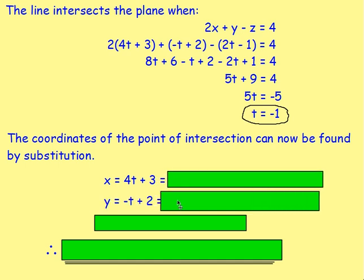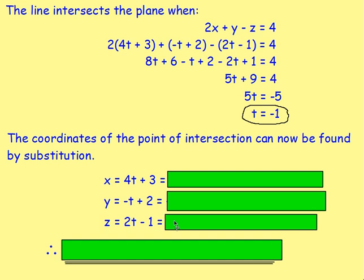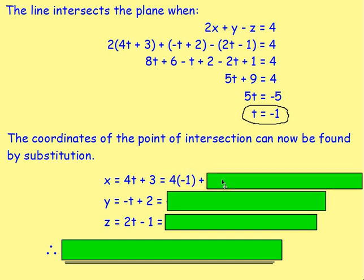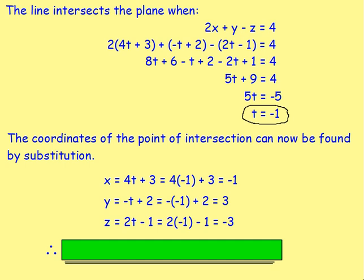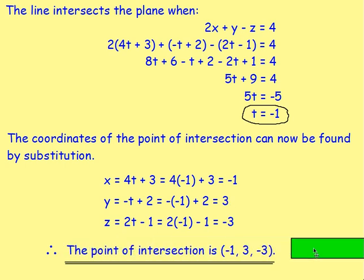That's what x, y, and z were equal to, but because we know t, we can sub it in. We'd have 4 times -1 plus 3, that will give us -1. Y would equal -(-1) + 2, which equals 3. And z would equal 2 times -1 take away 1, which would work out to be -3. So we've just found out the values of x, y, and z.